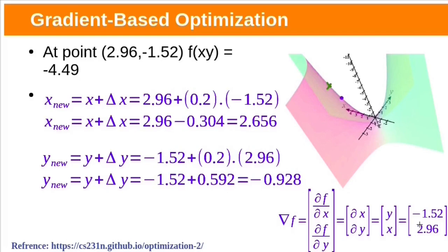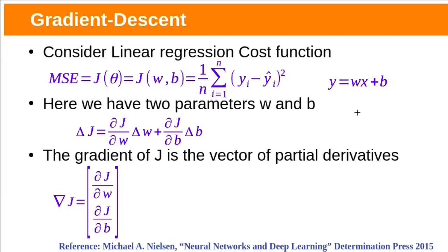At this point the gradient vector is (−1.52, 2.96). To maximize the function we take a small step in the direction of this gradient, and repeat the same process. This process is called gradient ascent. We have seen gradient-based optimization. Now let us see gradient descent.